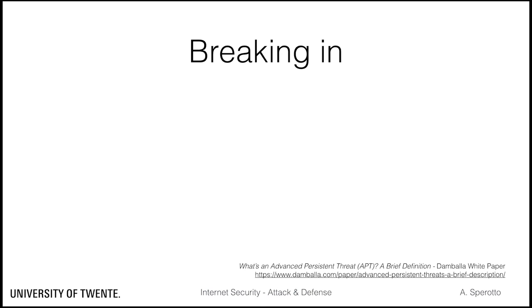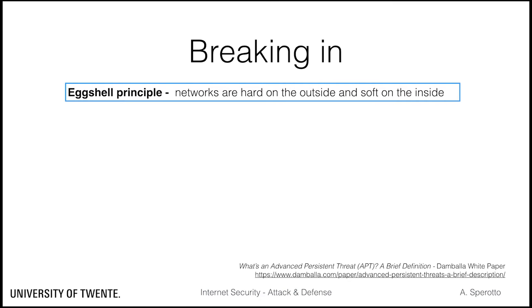APTs benefit from the so-called eggshell principle in networks. The principle says that nowadays networks are hard on the outside and soft on the inside. This points out a problem: we are used to focusing on attacks coming from the external world towards our network, and therefore we mainly focus on hardening our perimeter. We do not focus enough on the security of the internal network. In the case of APTs, this means that the initial compromise is key for the success of the attack.